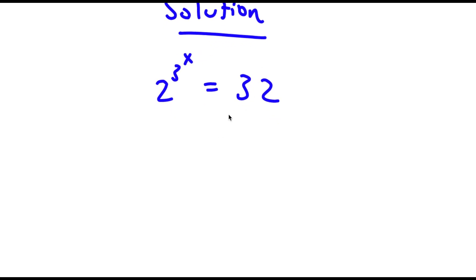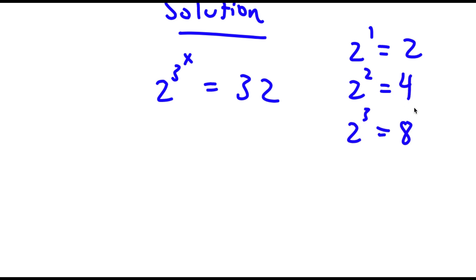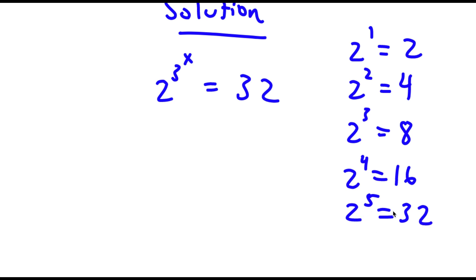Now 32 — if we want to make these two the same bases, I need to change 32 so that it has a base of 2. Well, 2 to the power of 1 is 2, 2 to the power of 2 is 4, 2 to the power of 3 is 8. Notice how for every added power the value is doubled: 2, then 4, then 8, then 16, then 16 times 2 is 32. And as you notice, 2 to the power of 5 is 32. So if I replace 32 with 2 to the power of 5, I get 2 to the power of 3 to the power of x is equal to 2 to the power of 5.